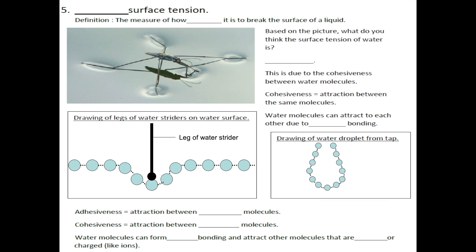Hi guys, let's continue our lesson regarding water. The fifth property of water is that water has a high surface tension. Surface tension refers to the measure of how difficult it is to break the surface of a liquid.